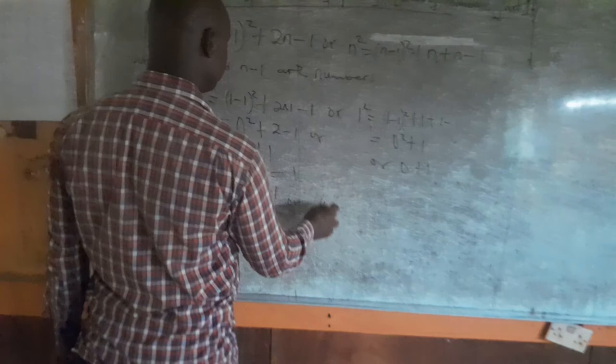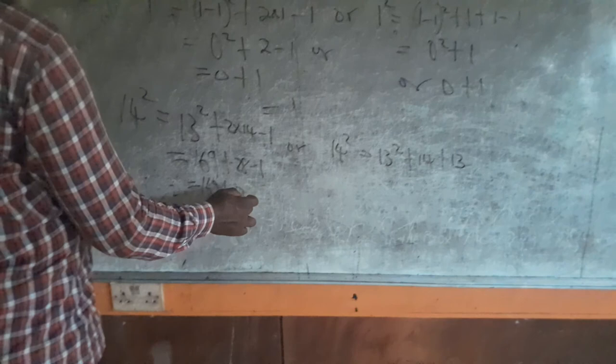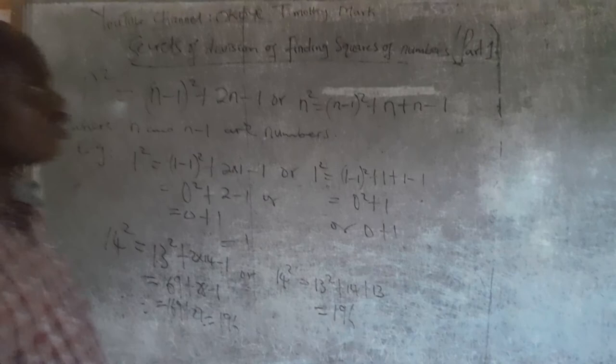Or if I say this one, 14² is 13² + 14 + 13. So this now, 169 + 27, that is 196. If you add it, likewise here, this is also 196. Because here and here, we also get 27.